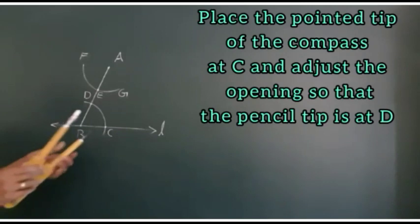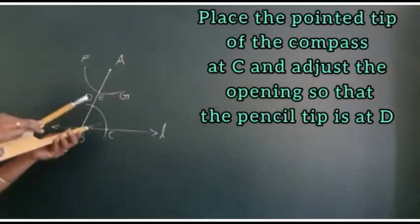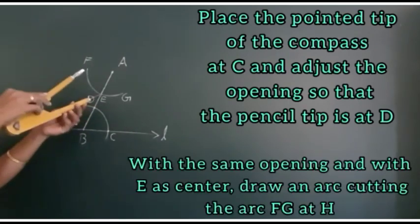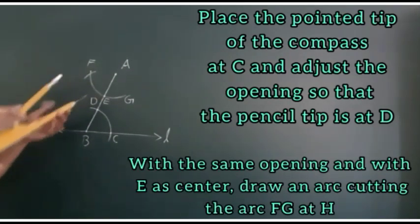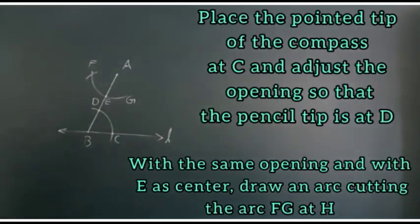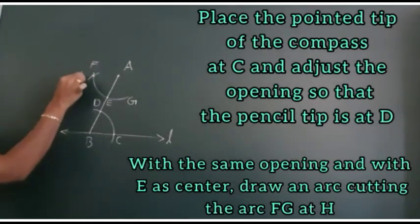Now place the pointed tip of the compass at C and adjust the opening so that the pencil tip is at D. With the same opening and with E as center draw an arc cutting the arc FG at H.